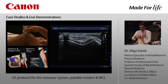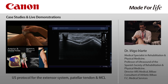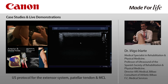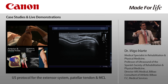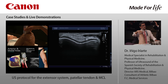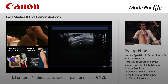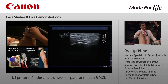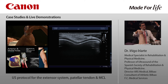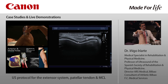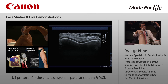We can assess the trochlear and femoral cartilage by asking the patient to flex the knee completely and examining the cartilage in both short axis and long axis. All this anechoic structure is the cartilage. We need to assess its integrity — it should be anechoic like water — and also the integrity of the bone beneath the cartilage.